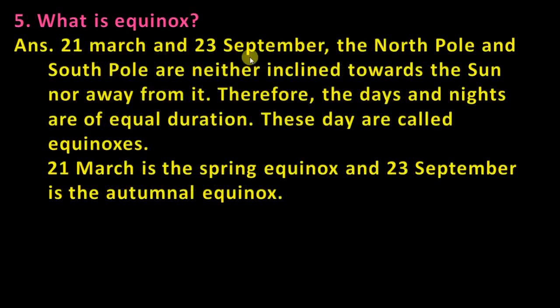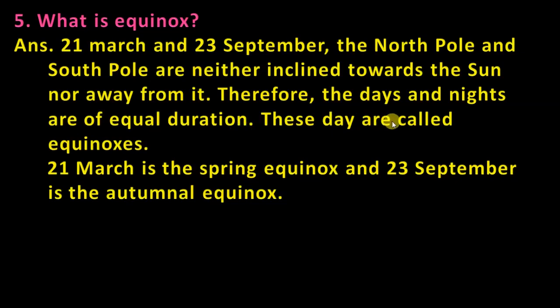What is equinox? On 21st March and 23rd September, the North Pole and the South Pole are neither inclined toward the sun nor away from it. Therefore, the day and night are of equal duration. When day and night are equal in the northern and southern hemisphere, this is called equinox.